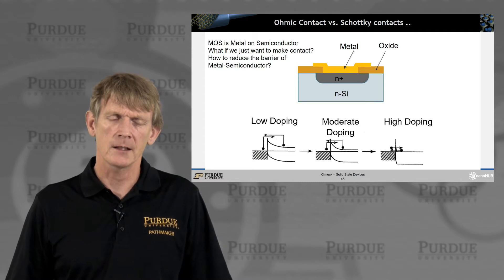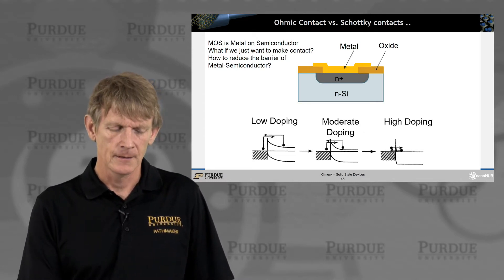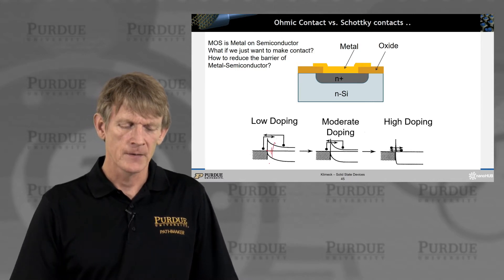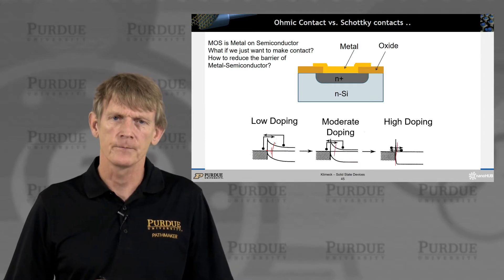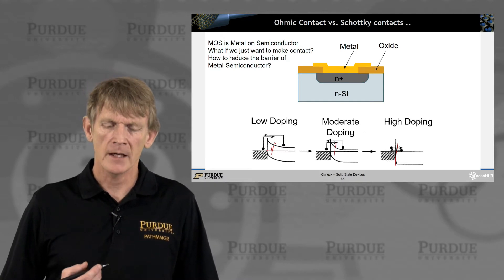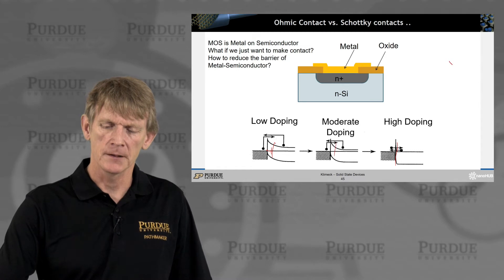So what you do in practical devices, you increase the doping, and as you do that, you make this depletion region that is long for low doping. You make it shorter and make it really short. So you make the depletion region very short by having a very large doping. Remember, we have to have a charge balance.